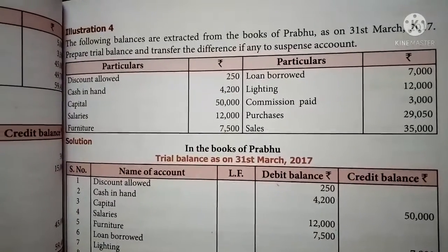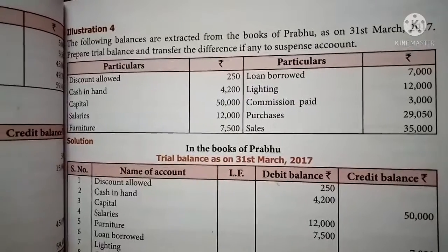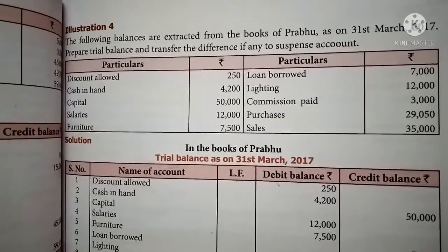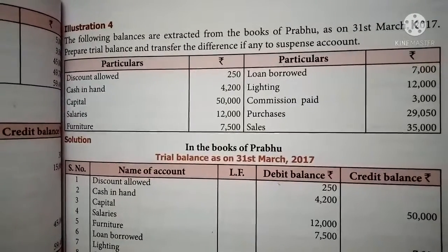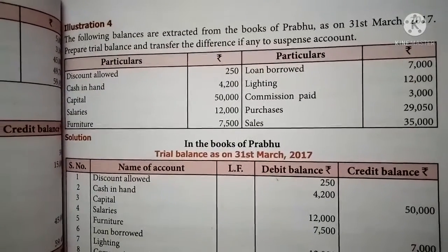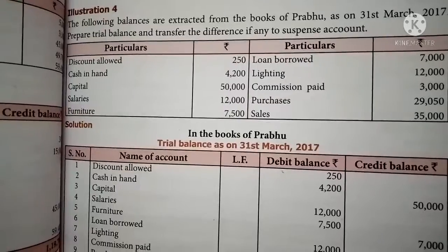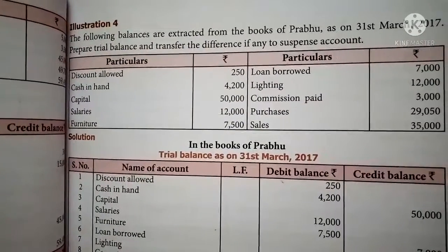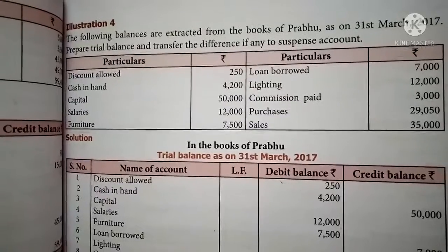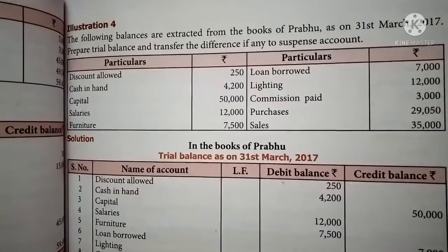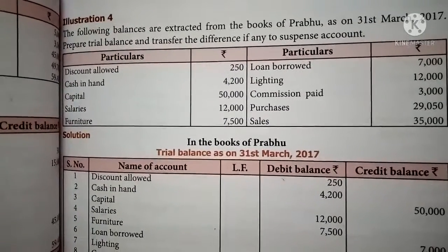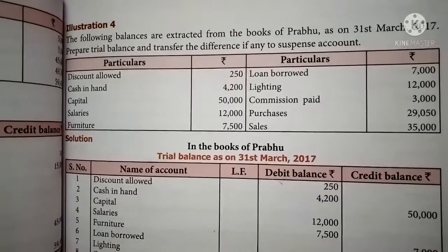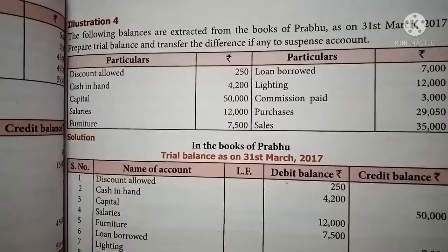Commission paid is also an expense, debit column — 3,000. Purchases is a payment, debit column — 15,000. Sales is one of the revenue items, so it should be shown on the credit column — 35,000. Whenever a sum asks for a trial balance, first go through all the information given and find out which amount should be shown on the debit column and which on the credit column.